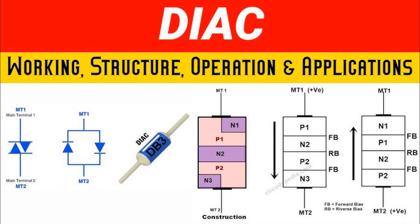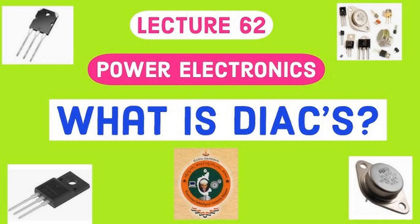Symbol: the DIAC symbol in circuit diagrams is a triangle pointing towards a line, with two lines extending from both ends to represent the two terminals, A1 and A2. The symbol shows that the DIAC can conduct in both directions.